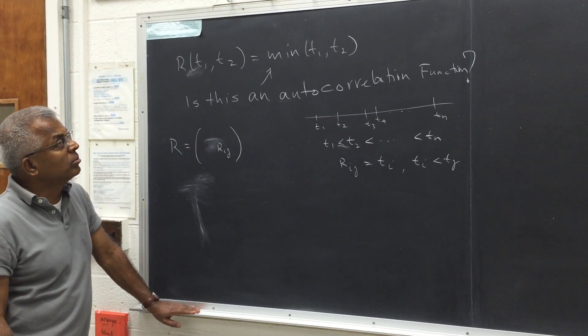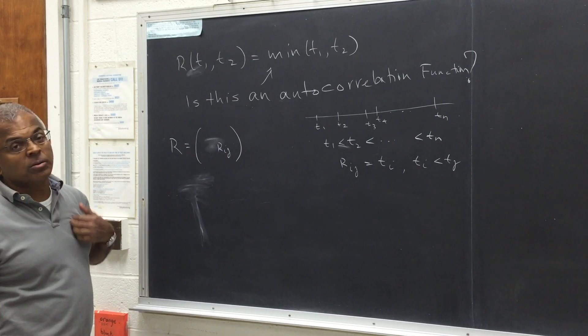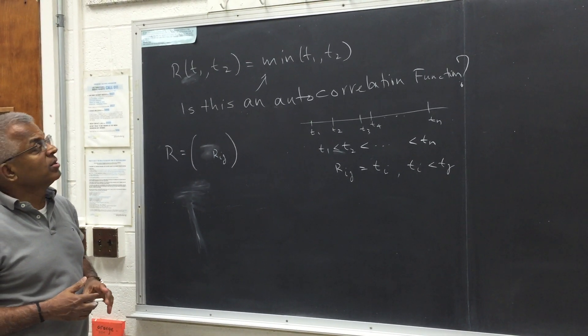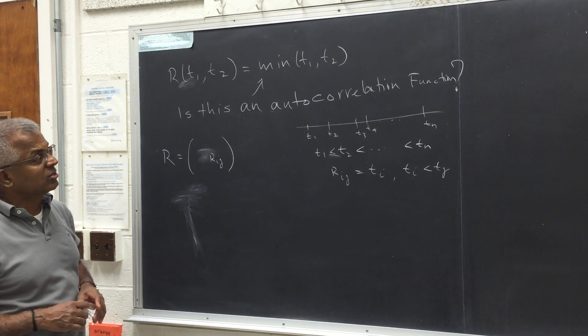So let's look at this interesting problem. Consider the function minimum of t1, t2, obviously a nonlinear function. The question is, is this an autocorrelation function?